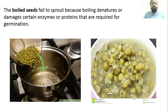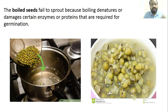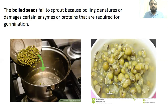Boiled seeds fail to sprout because boiling denatures or damages certain enzymes or proteins that are required for germination. So the proteins and enzymes responsible for sprouting get damaged, which is why boiled seeds do not sprout.